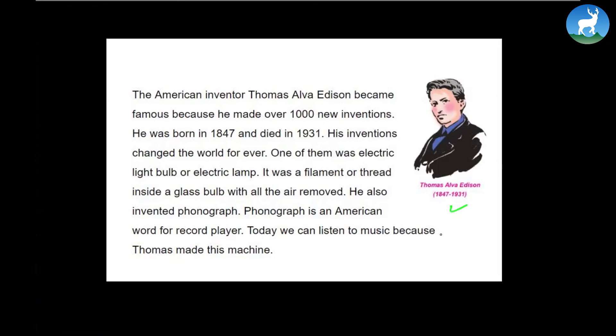His name is Thomas Alva Edison. The American inventor Thomas Alva Edison became famous because he made over 1000 new inventions. He was born in 1847 and died in 1931. His inventions changed the world forever. One of them was electric light bulb or electric lamp. It was a filament or thread inside a glass bulb with the air removed. He also invented phonograph. Phonograph is an American word for a record player. Today we can listen to music because Thomas made this machine. From record player to light, a lot many inventions. He gave a breakthrough to a lot many inventions. Very important guy in the field of science. He has more than 1000 patent rights under his name. That's remarkable. All his life he kept on experimenting and he was never afraid of failures.